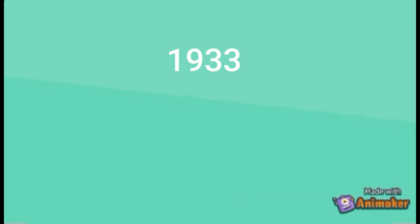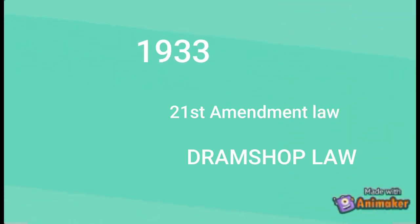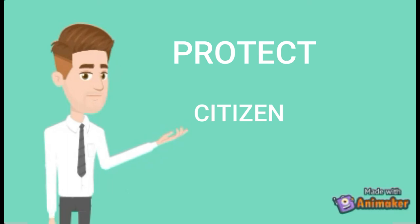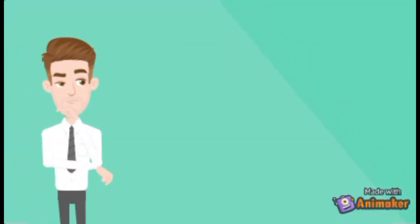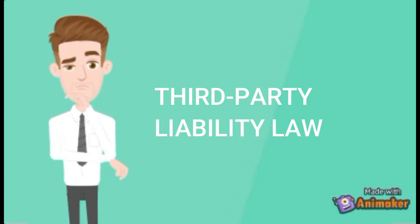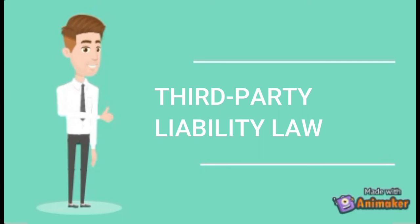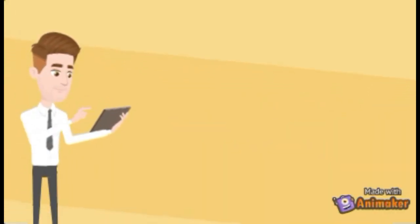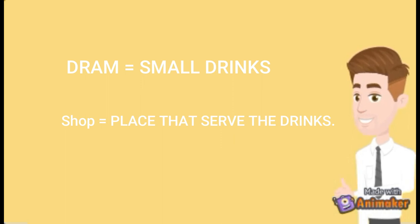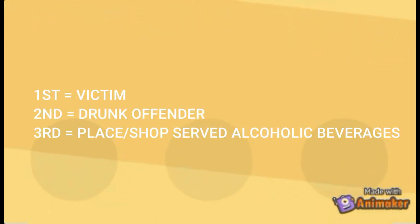Did you know that Coca-Cola was invented because of the implementation of the Prohibition Law? In the year 1933, the 21st Amendment repealing the Prohibition Law was passed, called the Dramshop Law. The Dramshop Law was implemented to protect American citizens from incidents caused by drunk drivers as alcoholic beverage consumption was now legalized. Dramshop Law is also known as the third-party liability law — the law that transfers the liability for damaged property from the drunken driver to the server or the place that served the drink to the driver. The word 'dram' means small drink, while 'shop' refers to the place that served drinks.